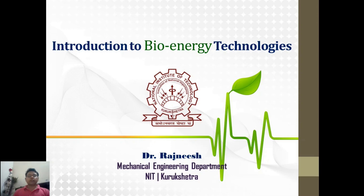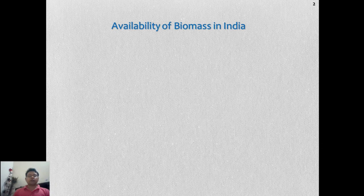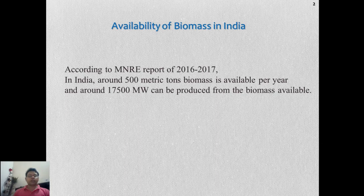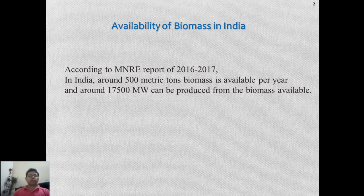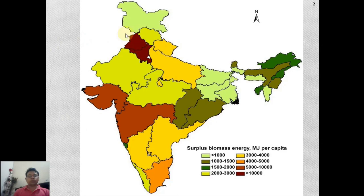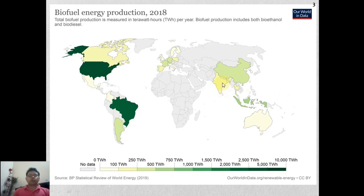Let's begin with some statistics on availability of biomass in India. According to a report of the Ministry of New and Renewable Energy, Government of India, around 500 metric tons of biomass is available per year, and with this available biomass around 17,500 megawatts of electricity can be produced. Most of the states in India are having good potential. Looking at the world demographic, US and Brazil are the largest producers of biofuel based on biomass. In Asia, China is also at a good level. Whereas India, despite having good potential, is not fully utilizing the biomass resources.